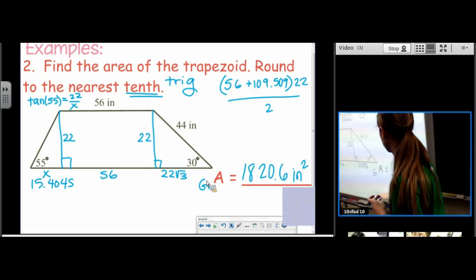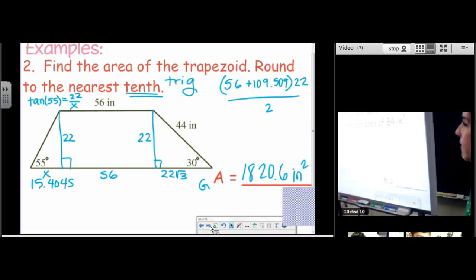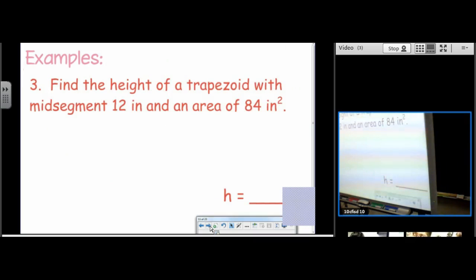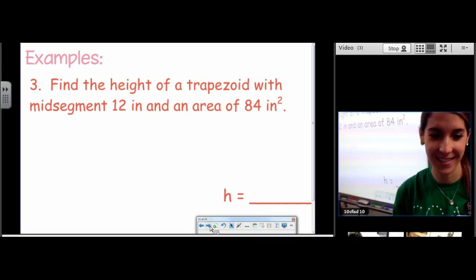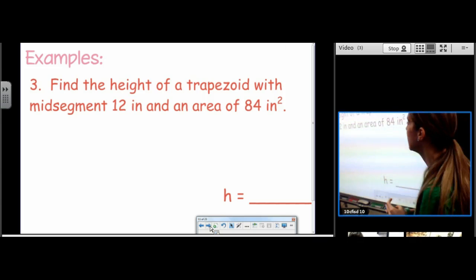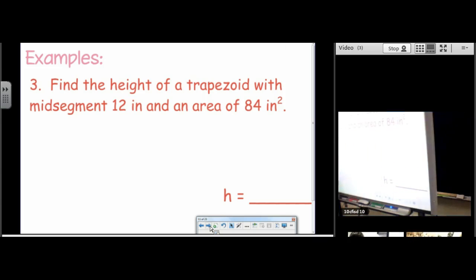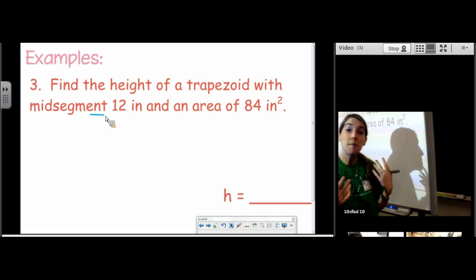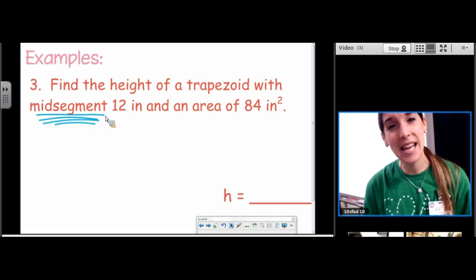Let's move on. Find the height of a trapezoid with mid-segment 12 and an area of 84. All right. Let's solve this. This was a key word to this problem. Key word.